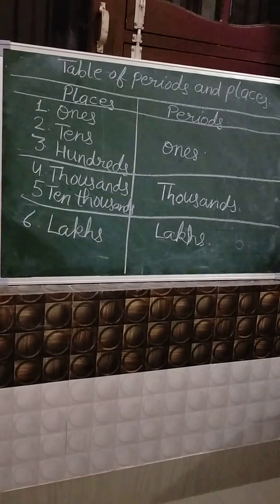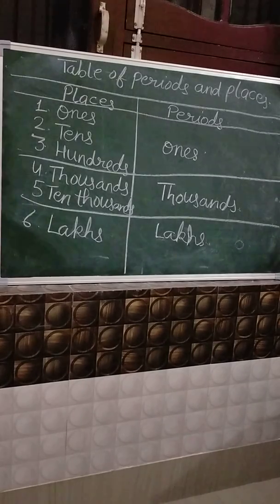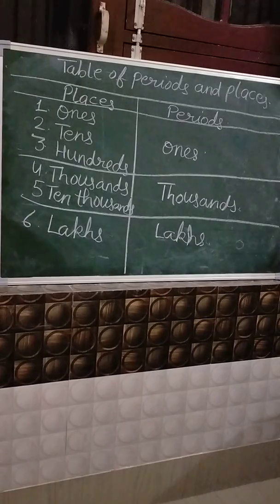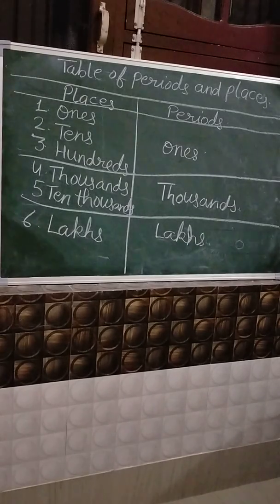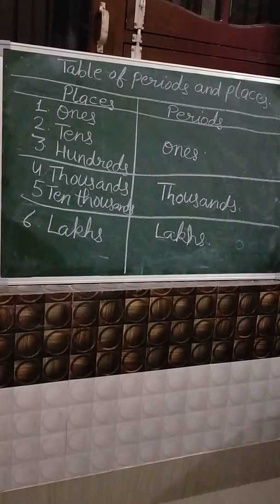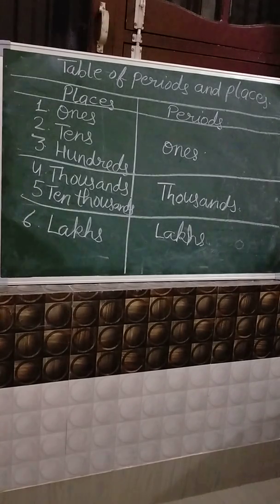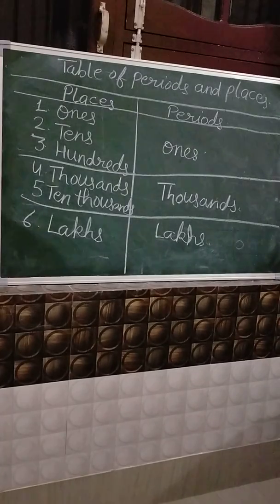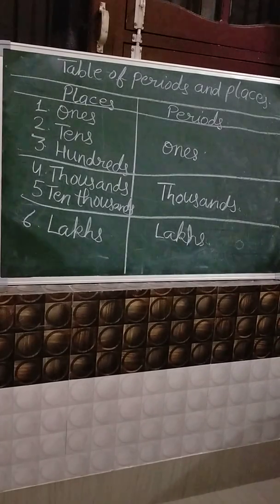So you have to learn that ones, tens, and hundreds live in the ones house. Thousands and 10,000 live in the thousands house. And lakh lives in the lakhs house. Please learn the names of the houses and their members, and then write them in a table as shown on the blackboard.